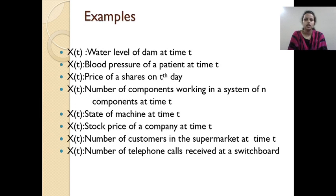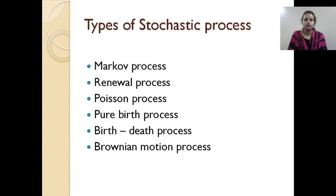Next, these are some examples of stochastic processes in real-life situations: the water level at a dam indexed by time, the blood pressure of a patient indexed by time, the price of shares, the number of components working in a system, the state of a machine, the stock price of a company, and so on. The types of stochastic processes include Markov processes, renewal processes, Brownian motion processes, and others.